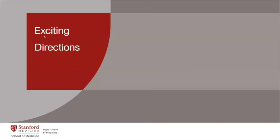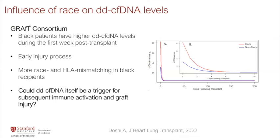Exciting new directions in acute rejection research: data from the GRAFT consortium run by the NIH shows that Black patients have higher donor-derived cell-free DNA levels in the first week post-transplant compared to non-Black patients. Black patients tend to have greater HLA mismatch between donor and recipient. Could this be an early clue about worse transplant outcomes seen in Black patients? And fascinatingly — could donor-derived cell-free DNA itself be a trigger for subsequent immune activation and graft injury, making it not only a biomarker but also a mediator of the alloimmune response?